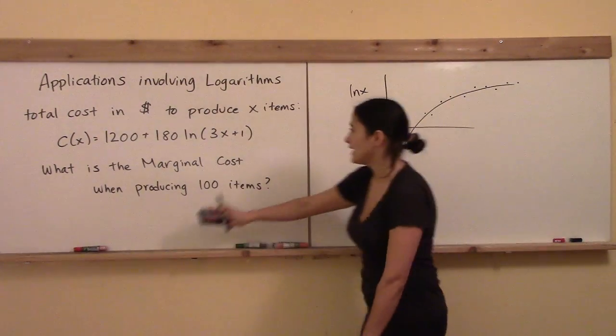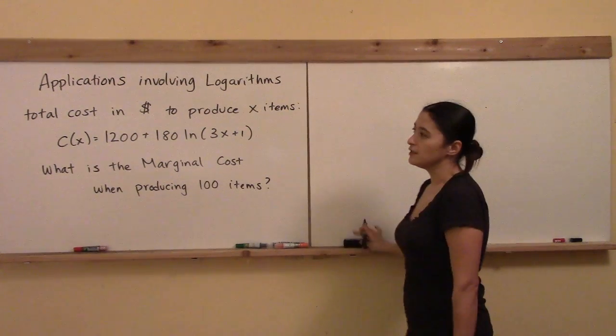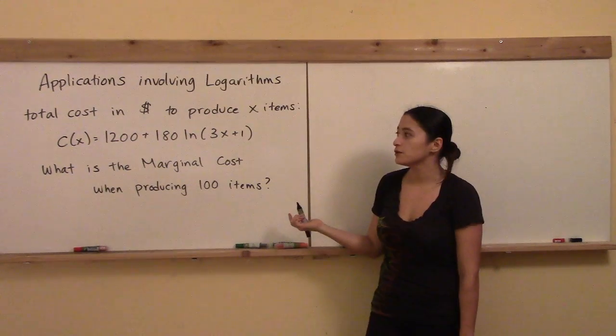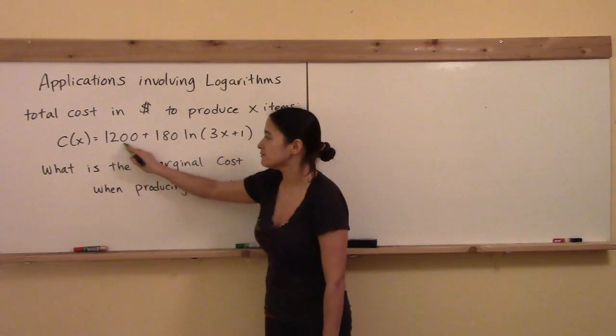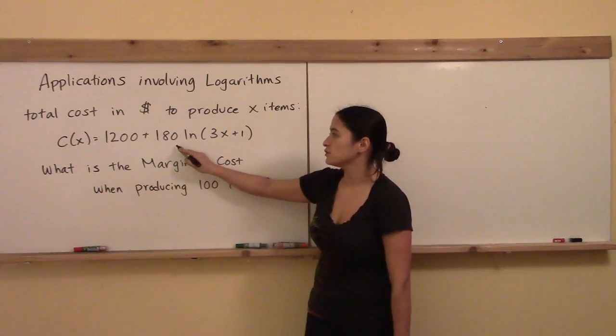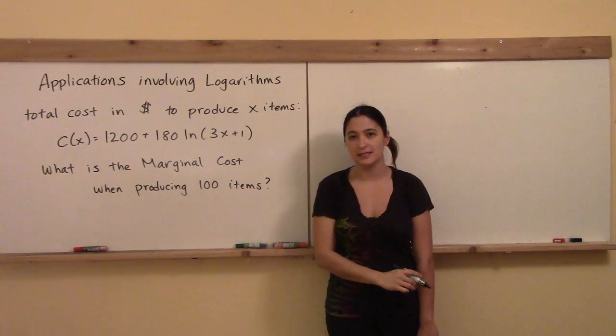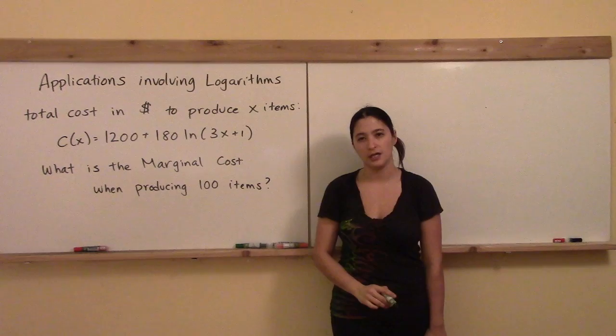If that's the case, then you might end up with the function that we see here on the board. So let's pretend that we have the total cost in dollars to produce x items, and that's given to us as a fixed cost of $1200 plus 180 times the natural log of 3x plus 1. The question I'd like to answer is, what is the marginal cost when producing 100 items?